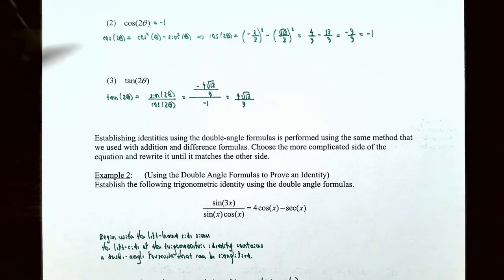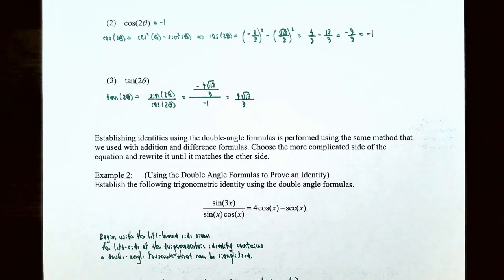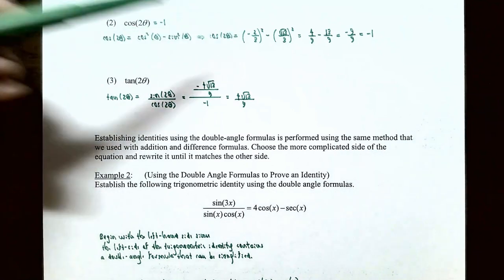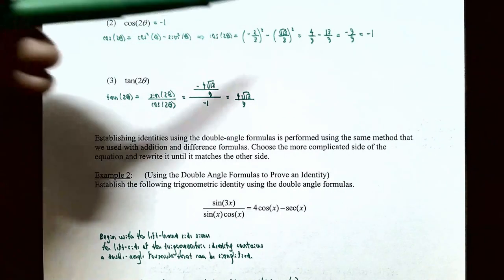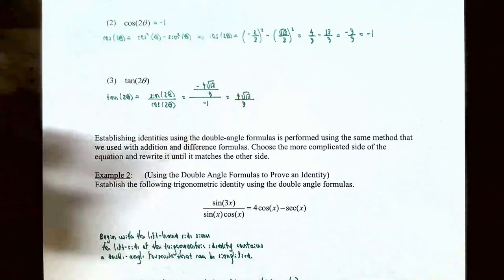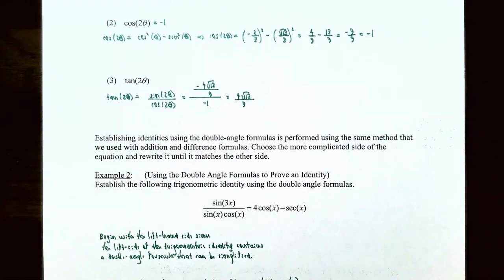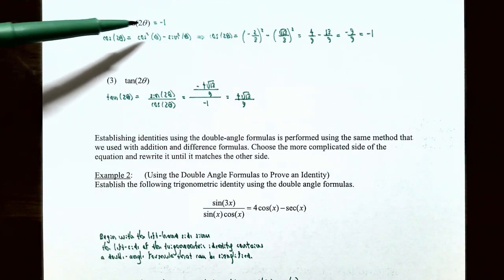For part 2, we find cosine(2θ) using the double angle formula: cosine 2θ equals cosine squared θ minus sine squared θ. Substituting cosine θ equals −2/3 and sine θ equals √13/3, we get (−2/3)² minus (√13/3)², which is 4/9 minus 13/9 equals −9/9 equals −1. So cosine of 2θ equals −1.